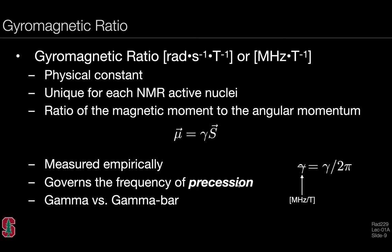Let's talk about the gyromagnetic ratio. It has units sometimes stated in radians per second per Tesla, perhaps more intuitively in megahertz per Tesla. It's a physical constant unique for each NMR active nuclei. It represents the ratio of the magnetic moment to the spin angular momentum. This expression is derived empirically and is useful when we look at the equation of motion. It governs the frequency of precession. It's important to remember that we sometimes work in radians, sometimes in hertz, so there are definitions of both gamma and gamma bar.